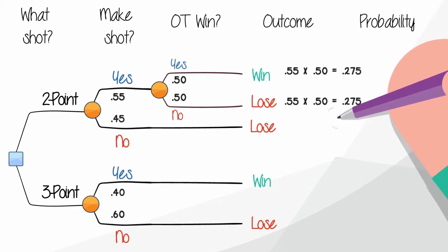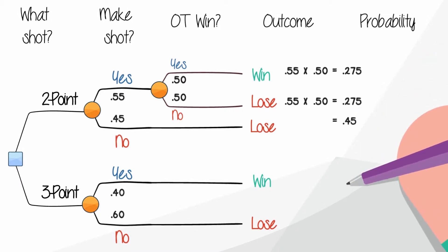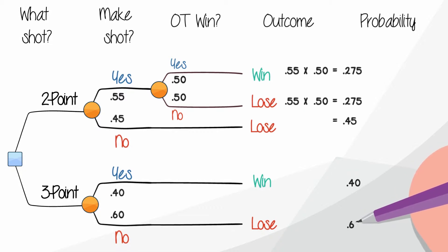Now, let's fill in the rest of the tree. There's a 45% chance you'll miss the two-pointer. For the three-point shot, you can also extend the outcomes, 40% to make it and 60% to miss it. Now, total up the values for each alternative.